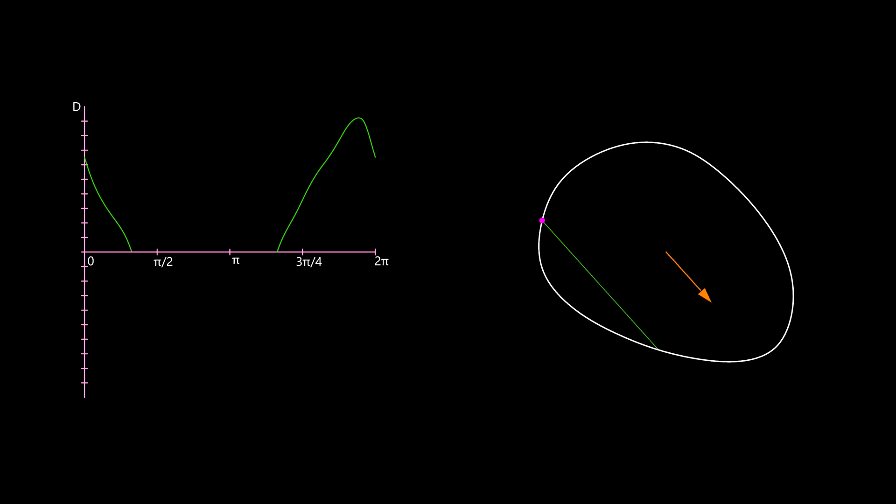To do that we must slightly modify the mapping method by extending the intersection line in negative direction related to the vector it is built of. This will result in filling the gaps in map curve.